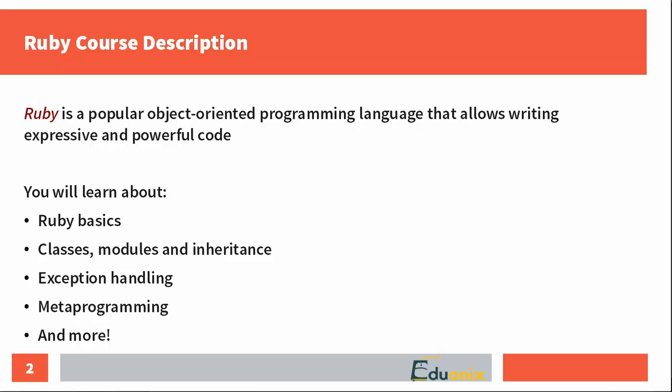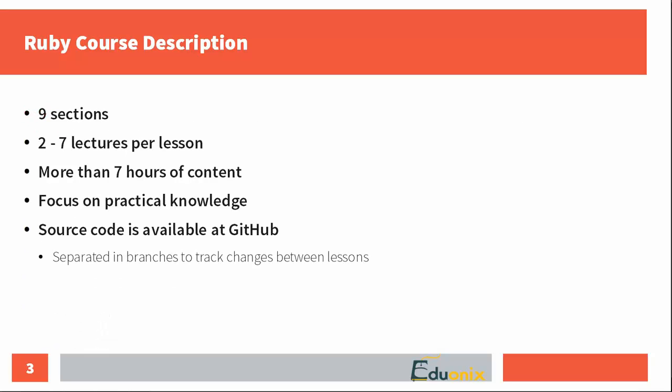In this course, you will learn about everything Ruby — classes, modules, inheritance, exceptions, file system, metaprogramming, and many other things. The course is divided into nine sections, each with two to seven lectures, and all in all the course spans more than seven hours.